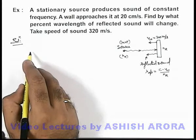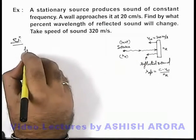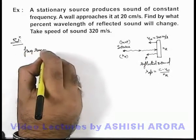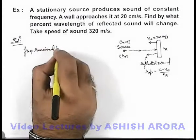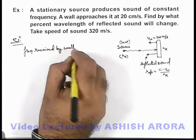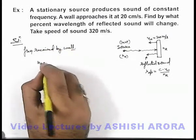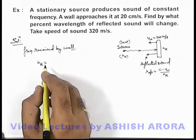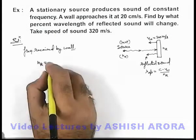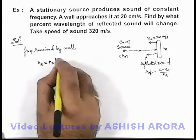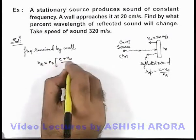If we first calculate the frequency received by wall, then this frequency received by wall can be calculated by taking wall as a moving observer. So this can be written as n₀(c + vw)/c.